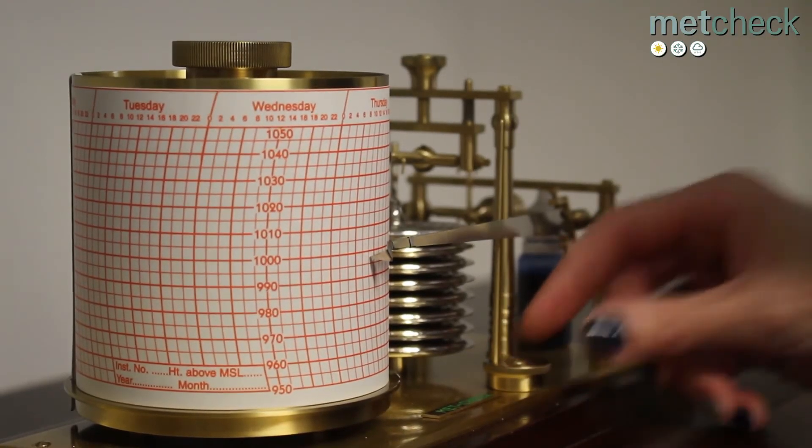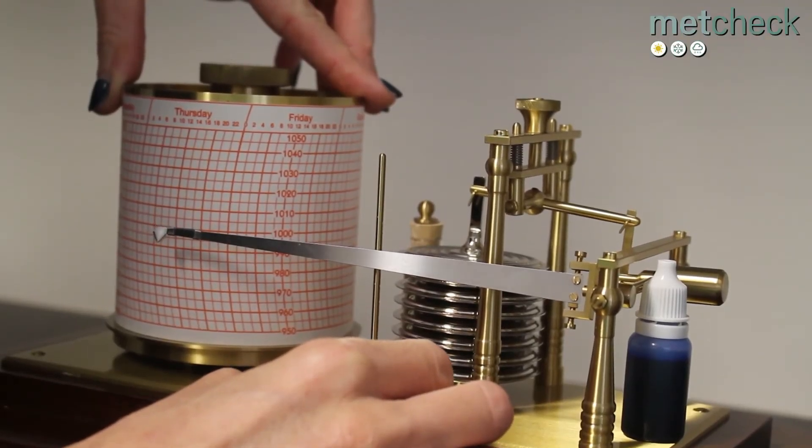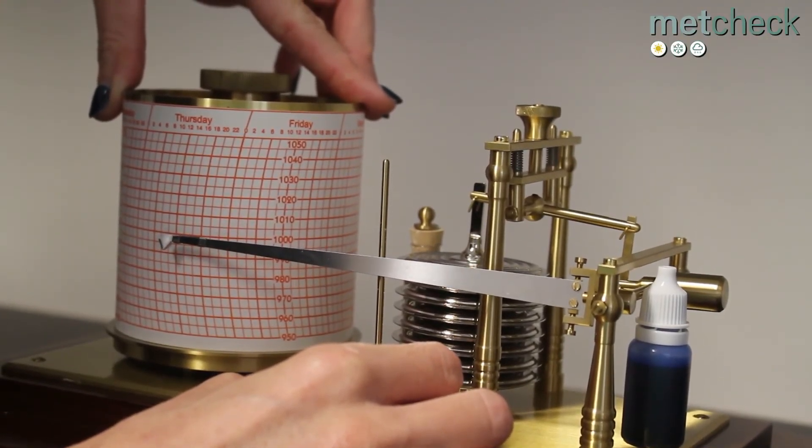Then using the twist arm, place the barograph arm gently onto the chart by turning the twist arm clockwise.